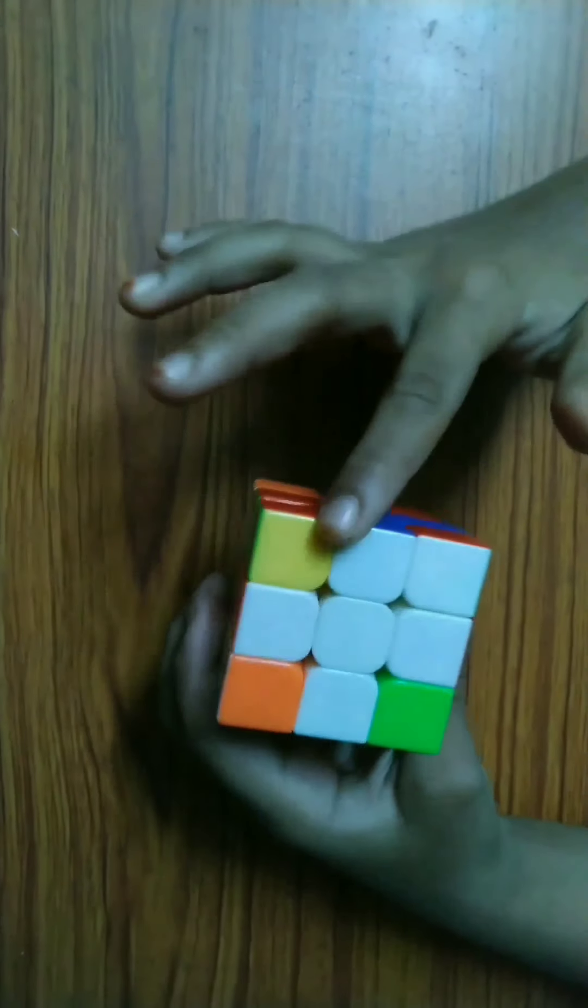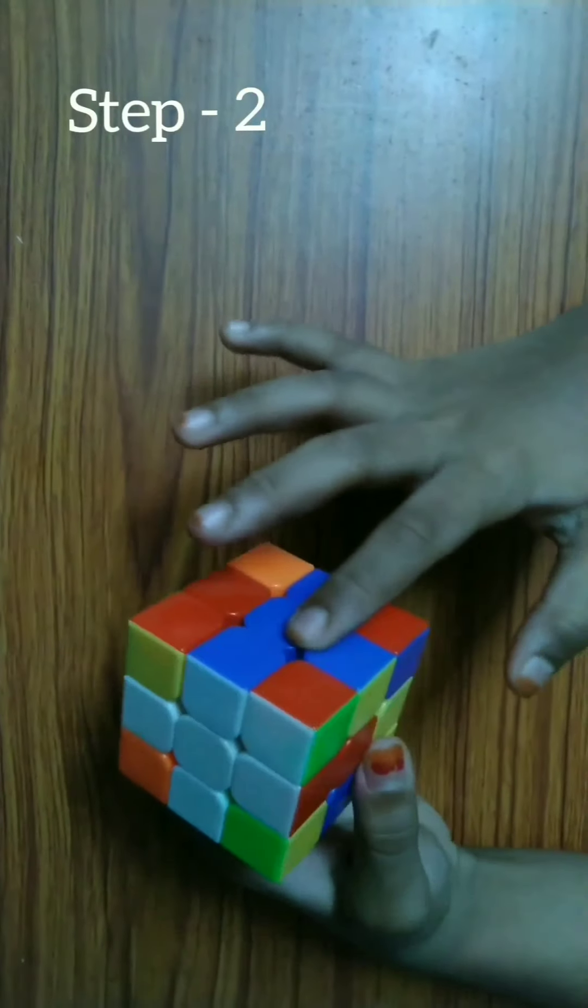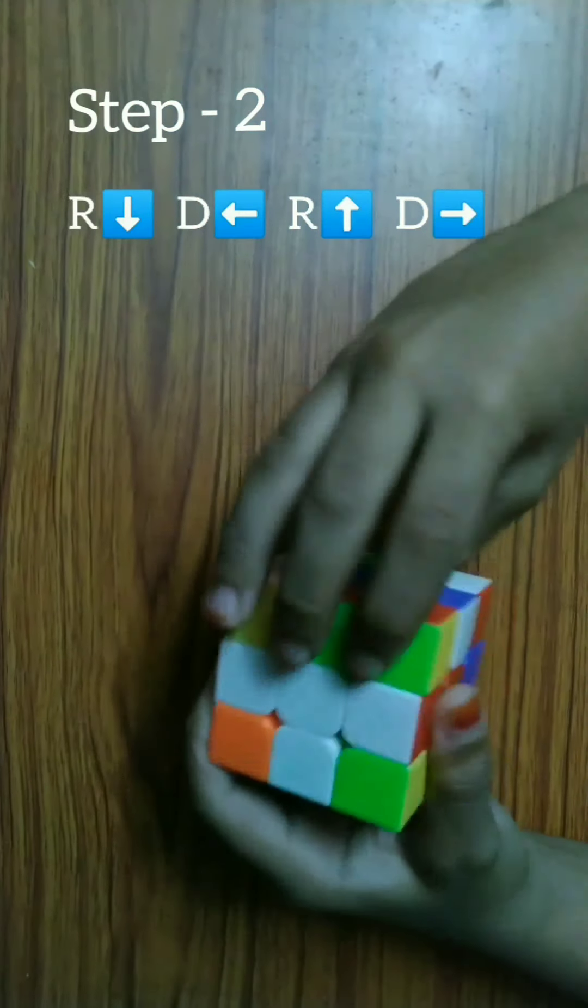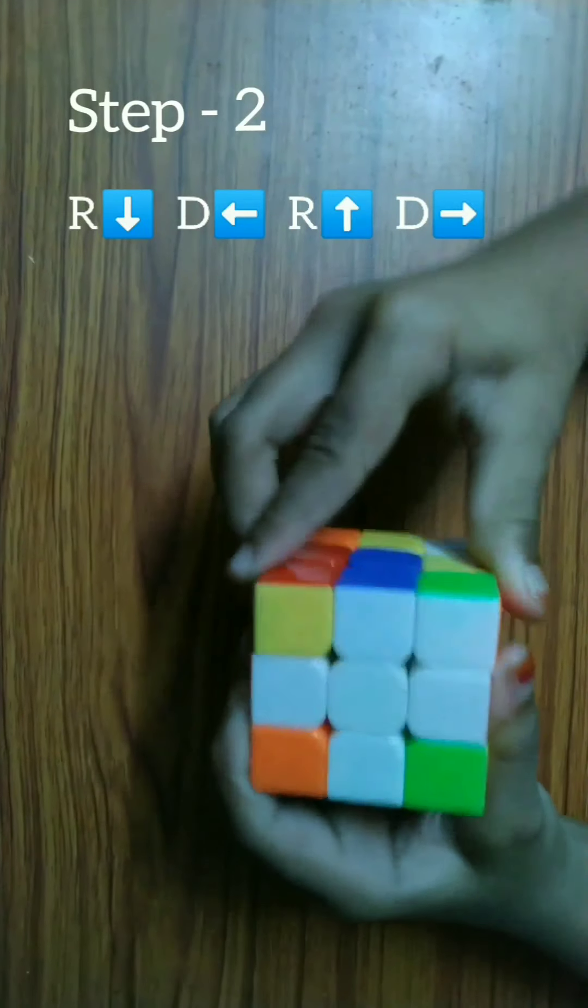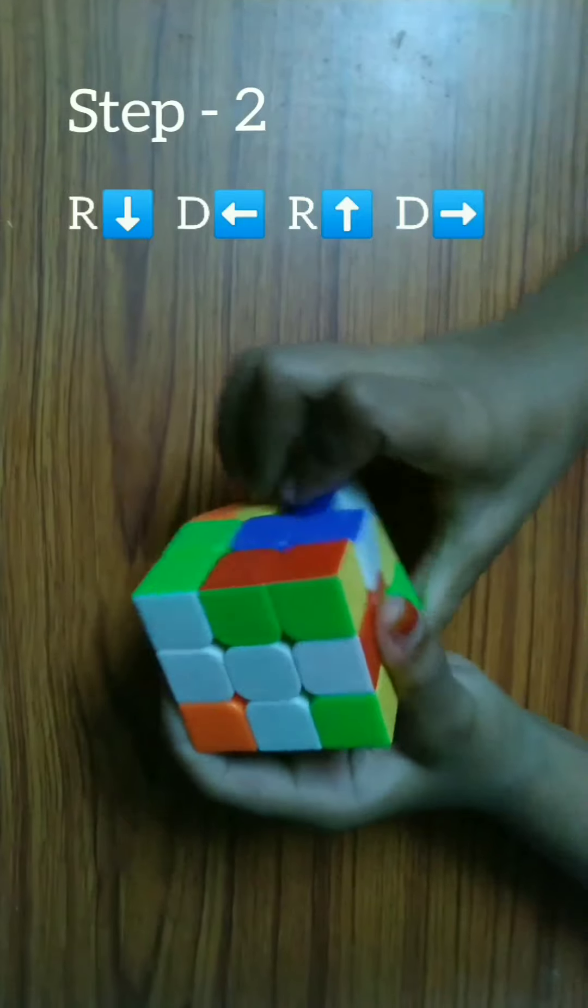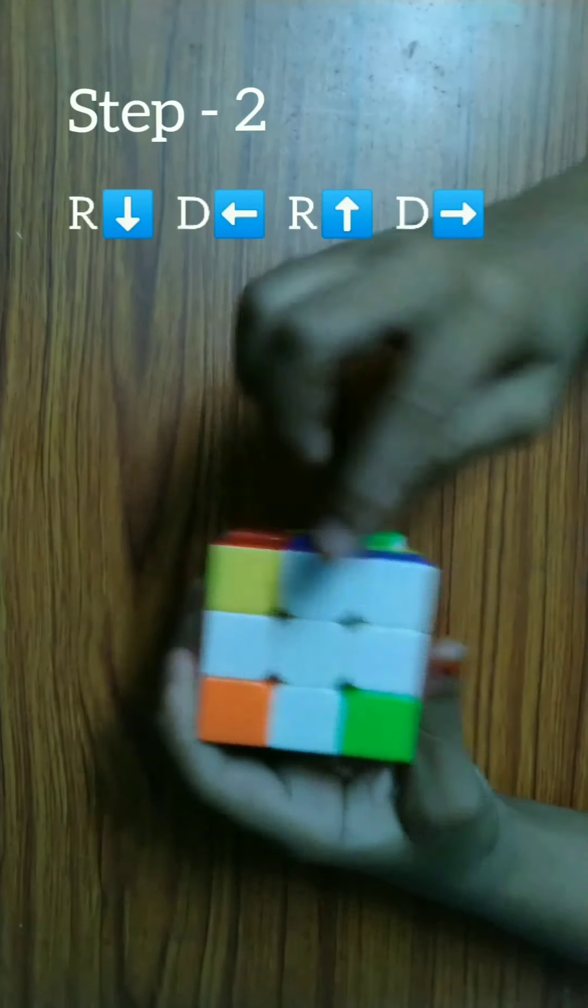Now we need to solve top corners. Right down, down left, right up, down right. Repeat these steps till you get it. Do the same for all corners.